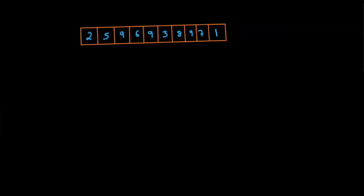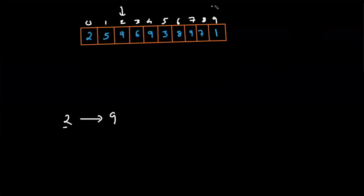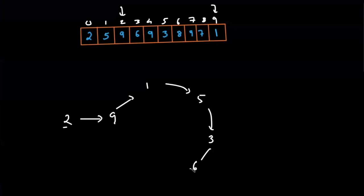The most optimal solution uses the linked list cycle method. Initially we start at index 0, which has value 2, so we go to the second index and see 9. Then we go to the ninth index and see 1. We move to the first index and see 5. Then we move to the fifth index and see 3. Then the third index gives 6. Then the sixth index gives 8. Then the eighth index gives 7. This chain creates a cycle.